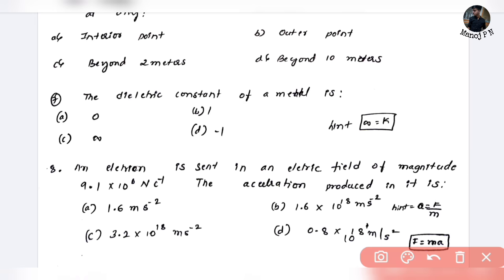The dielectric constant of a metal is — this is a standard question — K is equal to infinity. The dielectric constant of a metal is infinity.